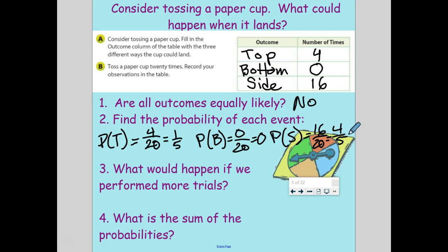So what would happen if we performed more trials? Our numbers would probably be similar, just larger. And eventually, we would definitely probably have it land on that bottom. And the last question is, what is the sum of all the probabilities? Well, if I add one-fifth plus zero plus four-fifths, I can make that into zero-fifths, and I get five out of five, and five divided by five is one. And that makes sense, because it's certain that something is going to happen. One means certain, and if I throw that cup up, it's going to land, and it's either going to land on its top, bottom, or side. So it makes sense that if we add all those things together, we're going to get one.